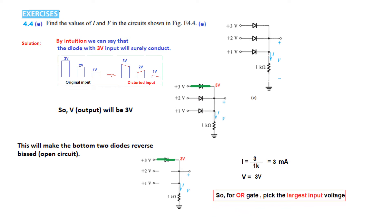So we can say that the OR gate picks the largest input signal.